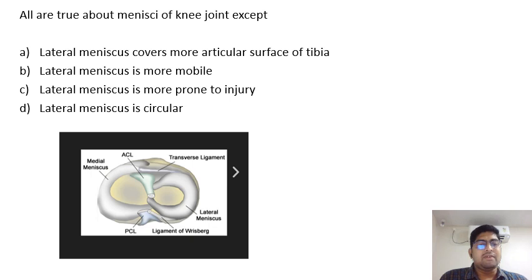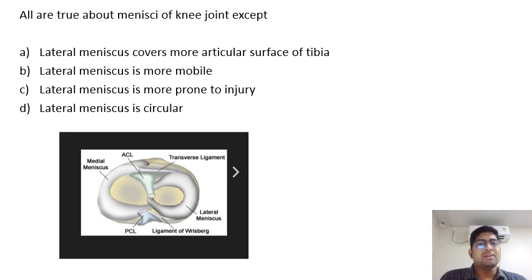Looking at the picture, the lateral meniscus covers the major part of the tibial articular surface, but the medial meniscus covers no more than 50% of the tibial articular surface. Coming back to the options: Option A — lateral meniscus covers more articular surface of the tibia.